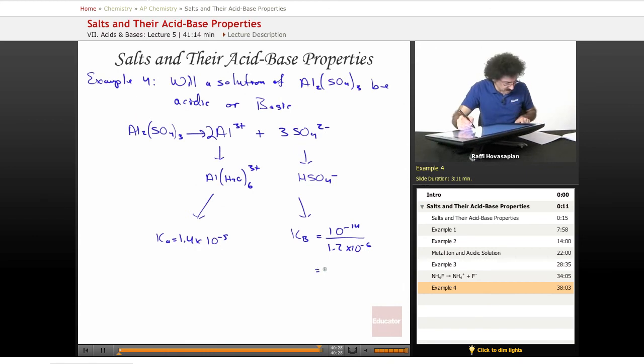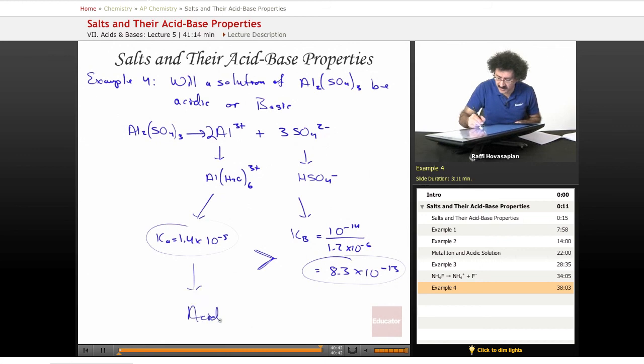So we get a Kb equal to 8.3 times 10 to the negative 13. Well, this is hugely bigger than this, which means that our solution will be acidic.